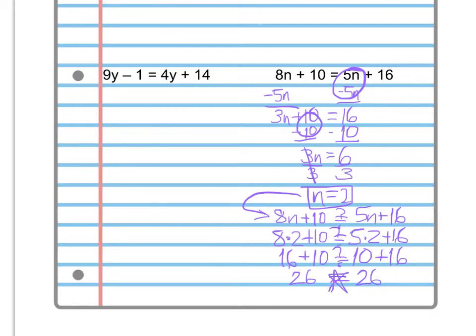It indeed does. So that proves that, or that's our check, and that shows that the answer is correct, that using a value of 2 for n means that our answer is correct. The other three problems on this side are very similar and probably a little easier, so you should be able to do it.